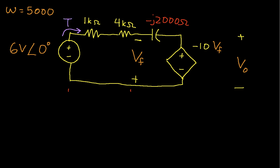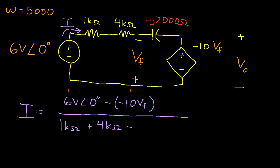So what I'll do is I'll define a current I and then from our discussion of single loop circuits, which is in a previous video, I can just write down that I will be 6 volts at an angle of 0 degrees minus minus 10 VF. So those are the voltage sources divided by the sum of the impedances. The only difference between this and the DC steady state analysis version is that this version uses impedances rather than just resistances.